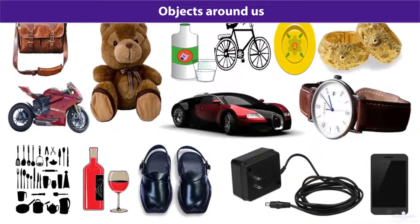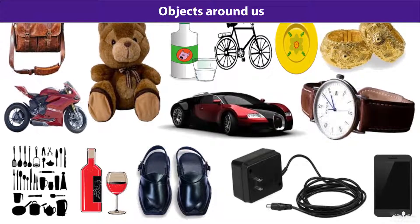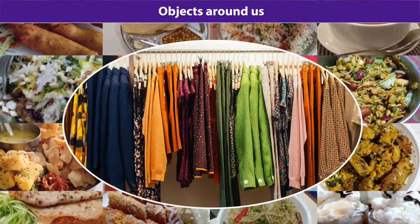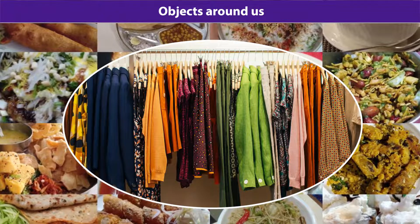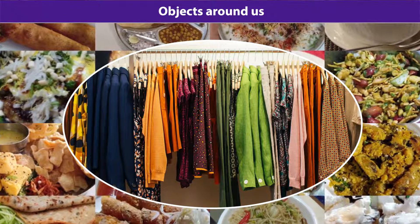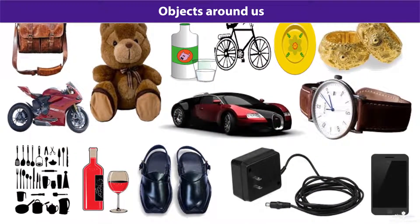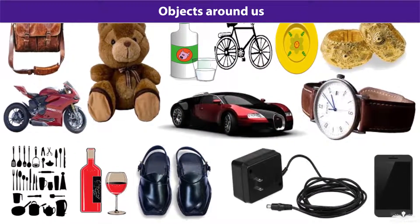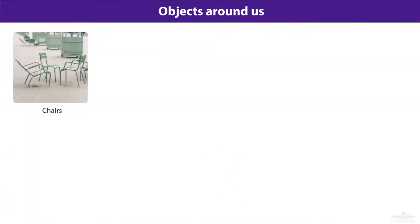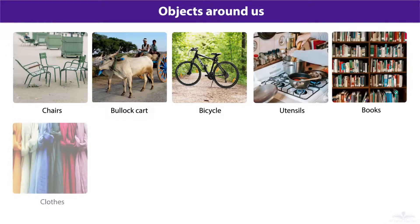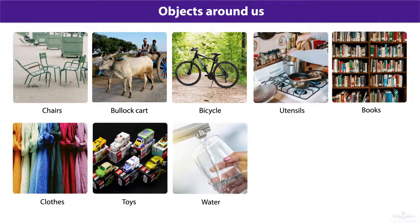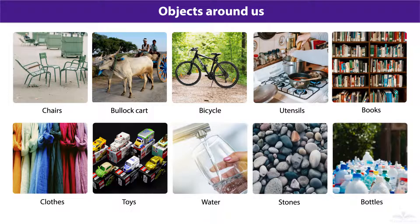In this video, let's discuss objects around us. We have seen that our food and clothes have so much variety. Not just food and clothes — there is a vast variety of objects in our surroundings, like a chair, a pillow, a cart, a bicycle, utensils, books, clothes, toys, water, stones, bottles, and many other objects. All these objects have different shapes, colors, and uses in our daily life.